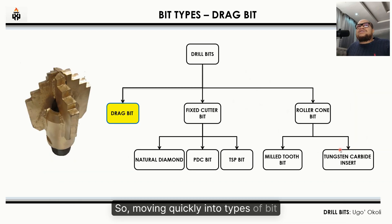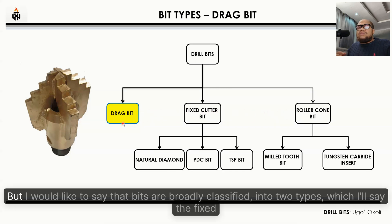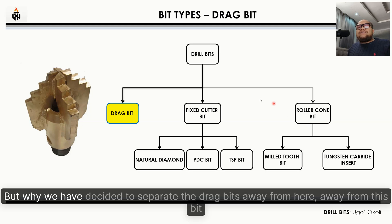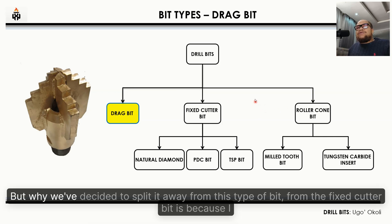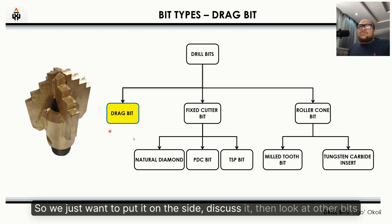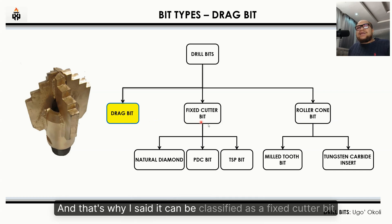Moving into the types of bits: looking at this diagram we have basically three types, but bits are broadly classified into two — fixed cutter and roller cone. We've separated the drag bit because it's seldom used in the oil and gas industry. The drag bit drills by percussion and can also drill with rotation; it's fixed, has no moving parts, which is why it can be classified as a fixed cutter bit.